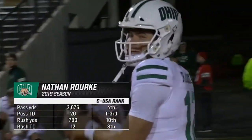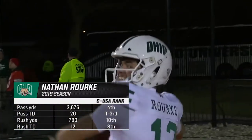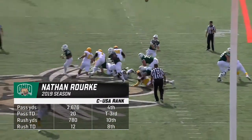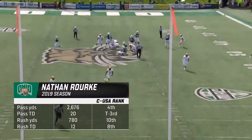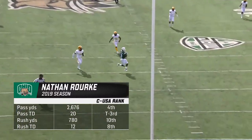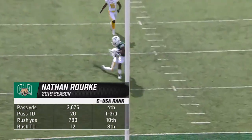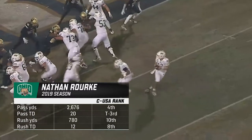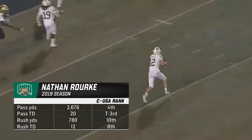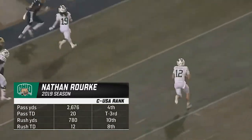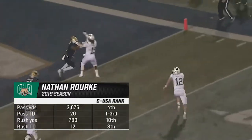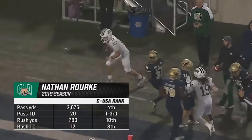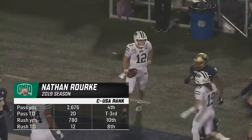Offensively, Ohio was led by veteran quarterback Nathan Rourke, a dual-threat machine who was named first-team All-MAC by the end of the season and was good enough to become a second-round pick in the CFL this past fall. With Rourke now playing north of the border, that leaves a big gap at the game's most critical position.